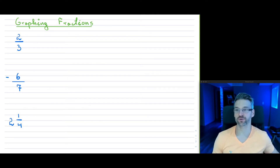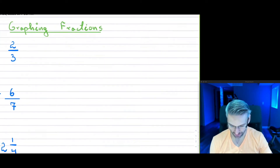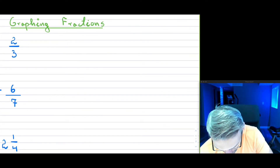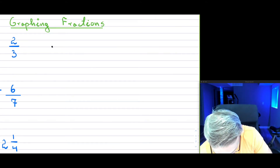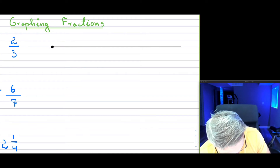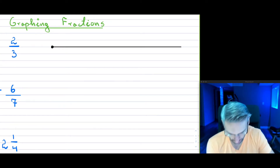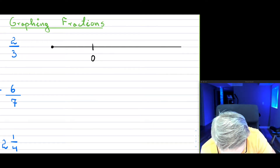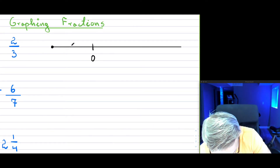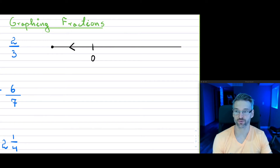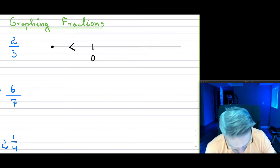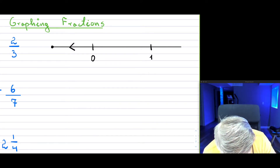Let's take the first example: 2 over 3, and we want to graph this on a number line. I'm going to draw the number line, and I'll make the assumption that zero is right here. Going left is negative, going right is positive. So 2 over 3 is more than zero but less than 1, so I'm going to put 1 right here.